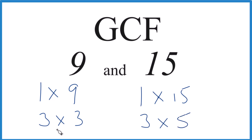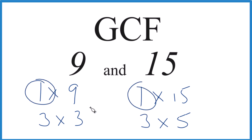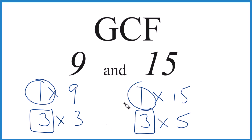We take a look at our two lists for 9 and 15, and we see that 1 is a common factor, but it's not the greatest common factor because 3 is larger than 1, and that's the largest common factor. So 3 is the greatest common factor between 9 and 15. There are other ways to do this — you could use prime factorization — but for these smaller numbers, this is a really good way to do it.